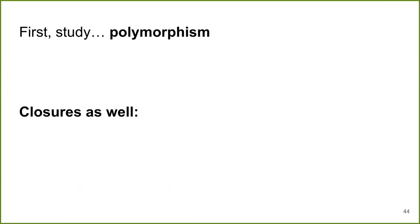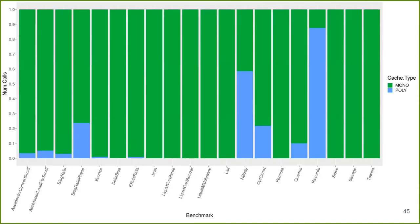For closures, it's a bit different — they are also polymorphic, but in a different way. We still have around half of our benchmarks that have polymorphic calls. But you can see that some of those benchmarks are much more polymorphic — they have a higher proportion of polymorphic calls.